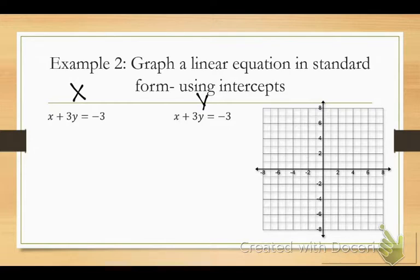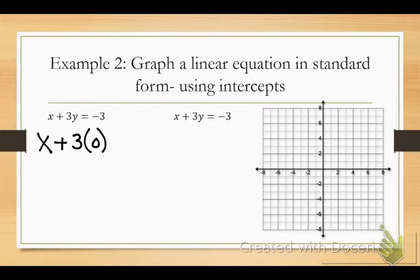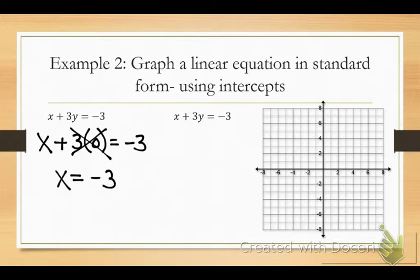Here's my rule: if I want to find my x-intercept, I plug in zero for y. If I want to buy all the shirts, I don't care how much the pants cost. So if I want to solve for x, I need to plug in zero for y. x plus 3y equals negative 3. x plus 3 times zero equals negative 3. What's 3 times zero? Zero. So x equals negative 3.